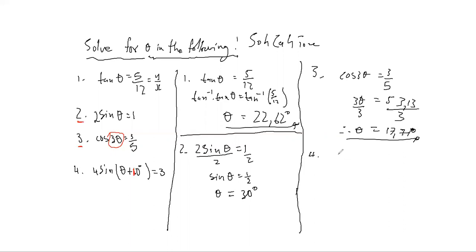Four. So now we have 4sin(θ + 10°) = 3. Four multiplied by sin θ, so I've got to divide by four both sides.